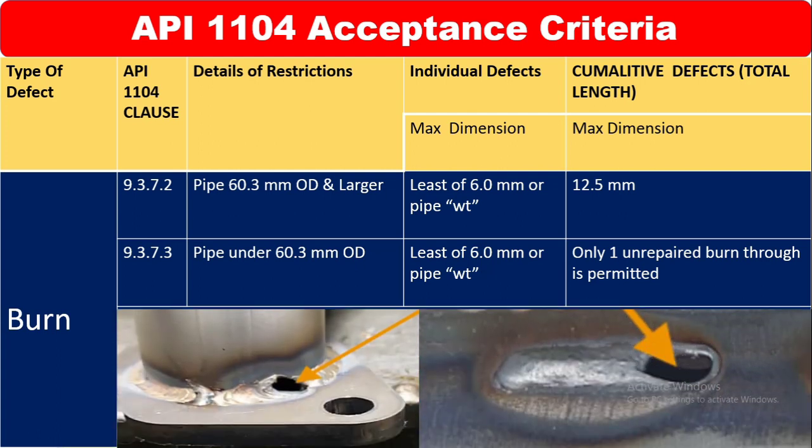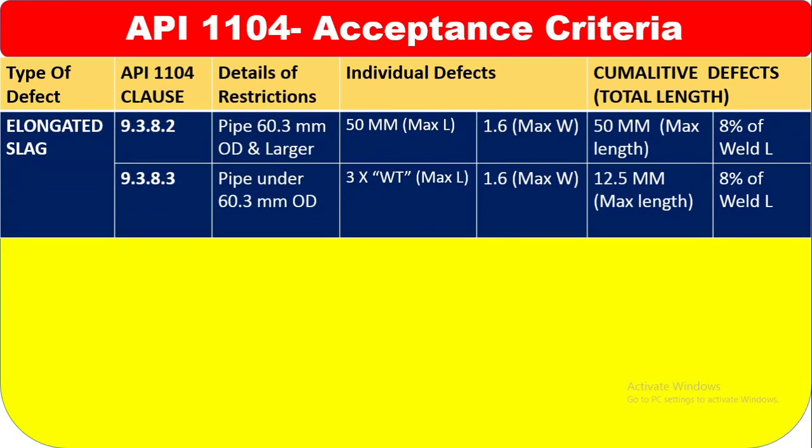You can see how burn through looks like. Now the type of defect — elongated slag. For elongated slag in API 1104 clause 9.3.8.2, for pipe 60.3 mm OD and larger, the individual defect maximum length is 50 mm and maximum width is 1.6 mm. So 50 mm by 1.6 mm only is acceptable for elongated slag.